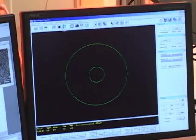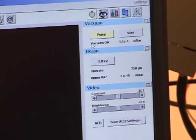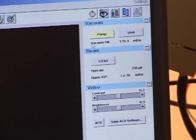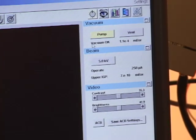Under the vacuum submenu, you see this status message now reads vacuum okay. And the pressure is 1.2 times 10 to the minus 4 millibar. The actual reading of pressure in the chamber is not as important as the status message that says vacuum okay. As long as it says vacuum okay, you know the pressure is low enough that you can open the column valve.